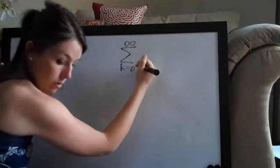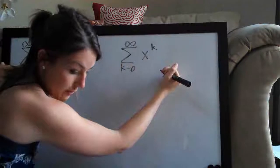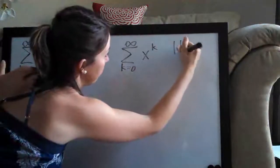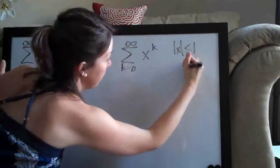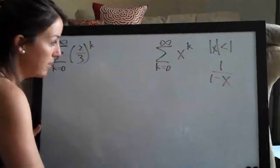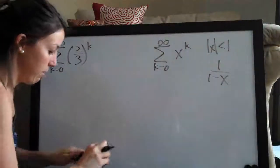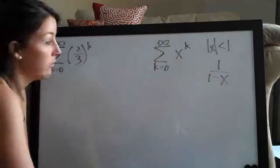K equals zero, x to the k... Okay, the formula is actually written out in a lot more detail than this, but these are really the only three parts that you need to remember.